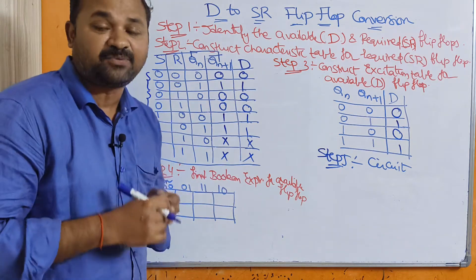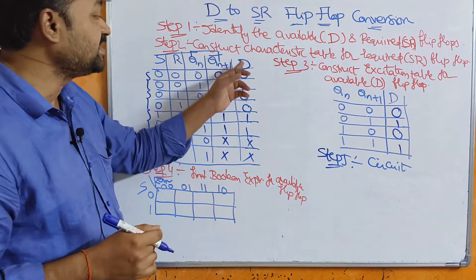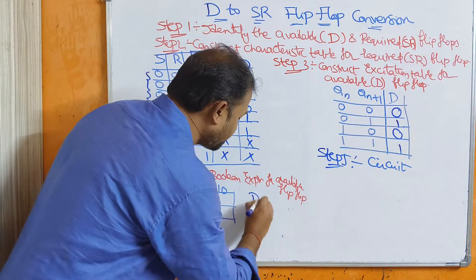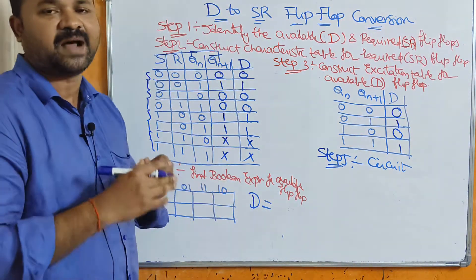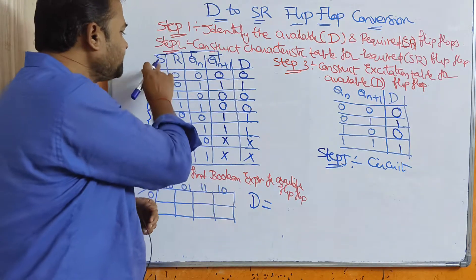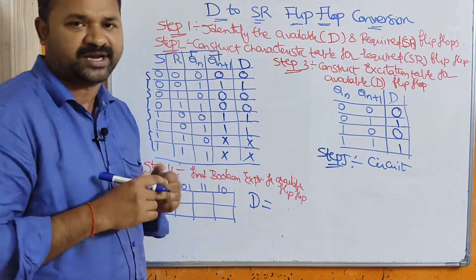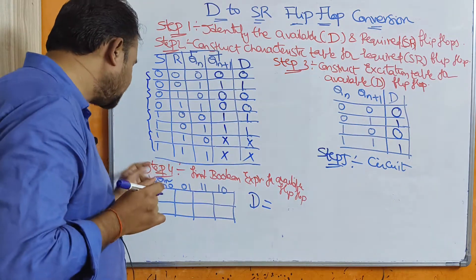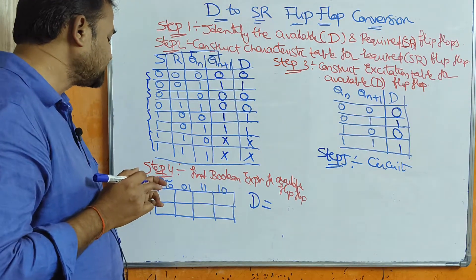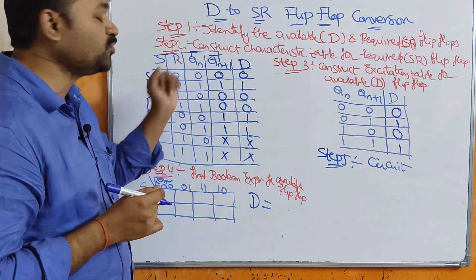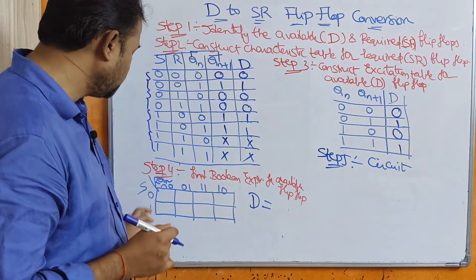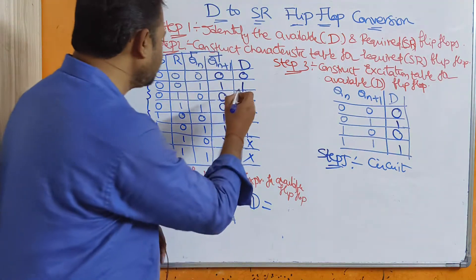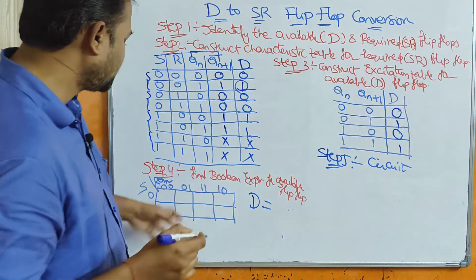Step 4 is to find the boolean expression for the available flip-flop. The available flip-flop is the D flip-flop, so we must find the boolean expression for D. We have three inputs: S, R, and Qn, so we require a three-variable Karnaugh map. This K-map represents S on one axis, whereas the next two inputs are R and Qn. Let us now fill the Karnaugh map table.